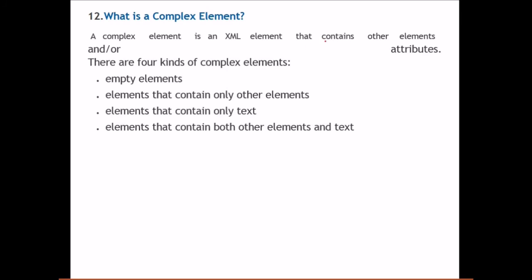What is a complex element? A complex element is an XML element that contains other elements or attributes. There are four types of complex elements: empty elements, elements that contain only other elements, elements that contain only text, and elements that contain both other elements and text.